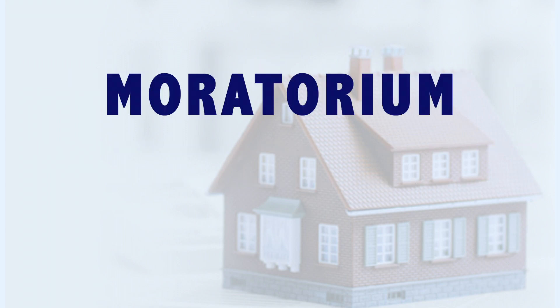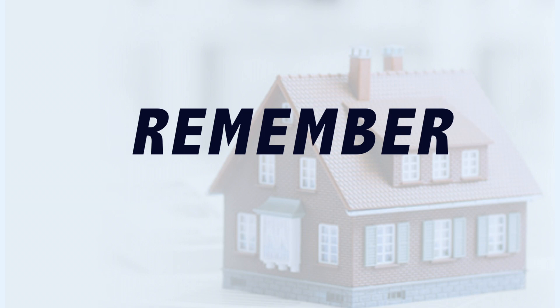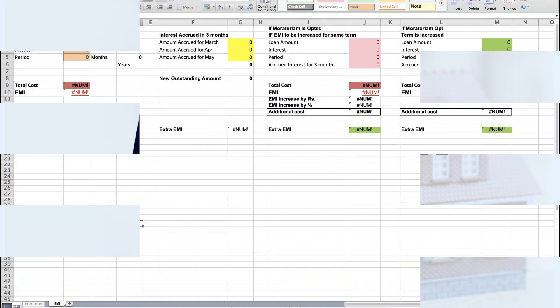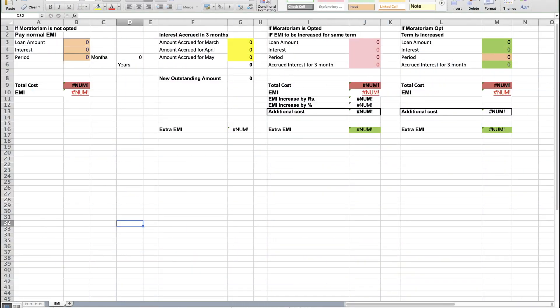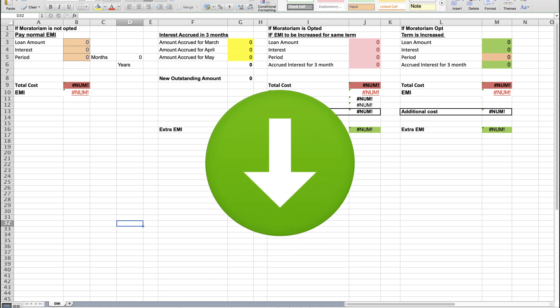Here I explain the impact of opting for a moratorium to help you take an informed decision. Remember, the calculation gives you a general view, not account specific. Here is the calculation sheet in Excel format — you can download it from the link given in the description.